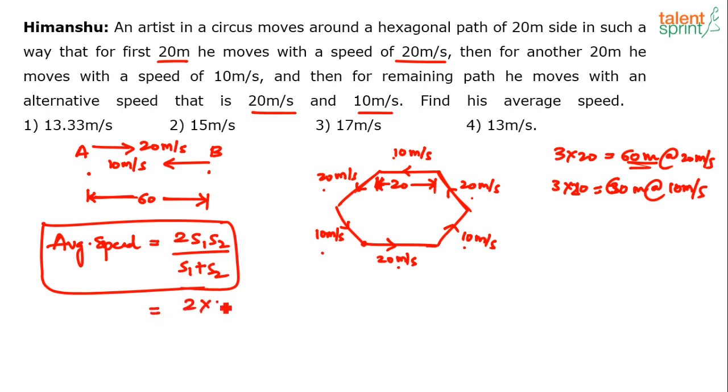So here, 2 into, speeds are 20 and 10 respectively, so 2 into 20 into 10 by 20 plus 10.